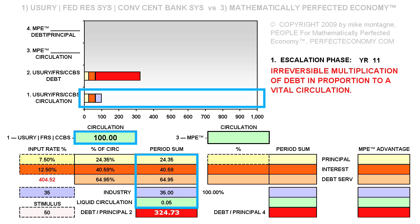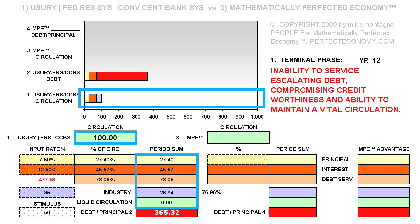We can't pay down the sum of debt. Our only tool to sustain the host for some while longer for the sake of the parasite is to moderate the rate of interest. As we move on to year 12 of the lifespan, we see that the costs of the subsequent magnitudes of debt encroach on industry.